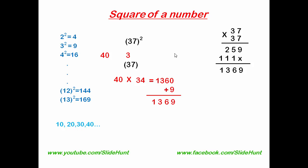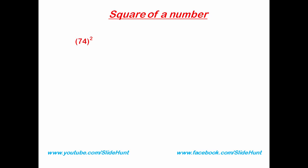Let's do another example — square 74. The nearest tens number is 70, so the difference is 4. 74 plus 4 is 78, and 74 minus 4 is 70. Multiply these two numbers: 78 times 70 is 5460.